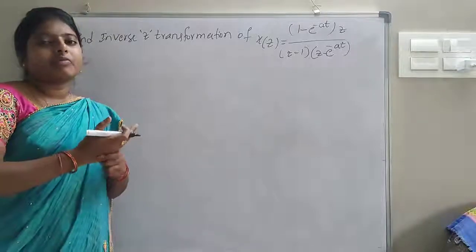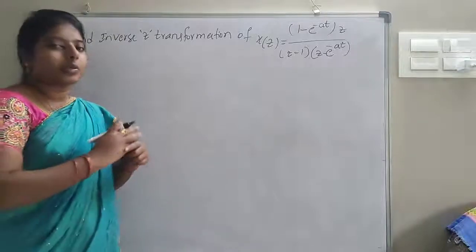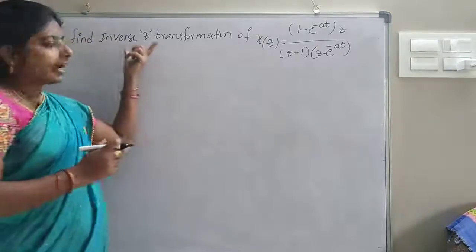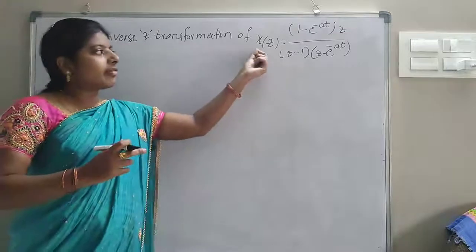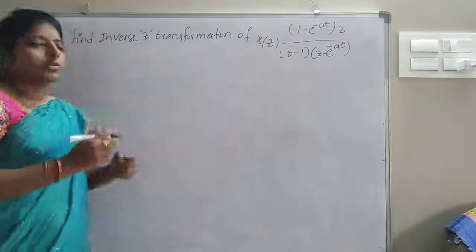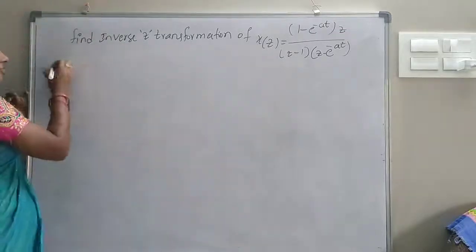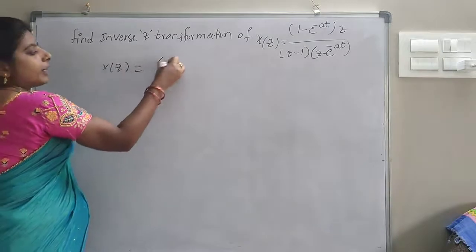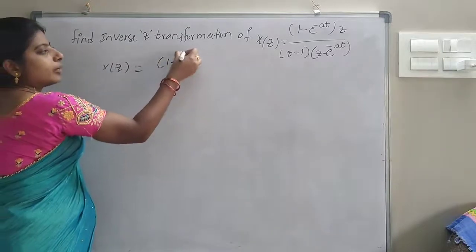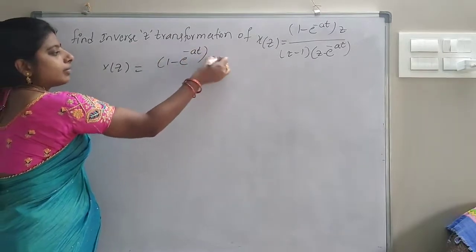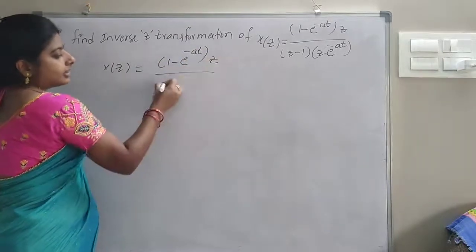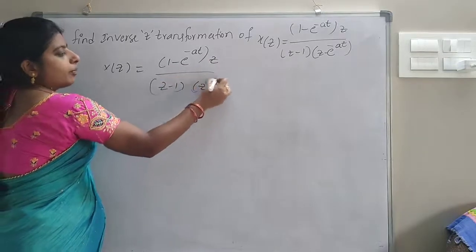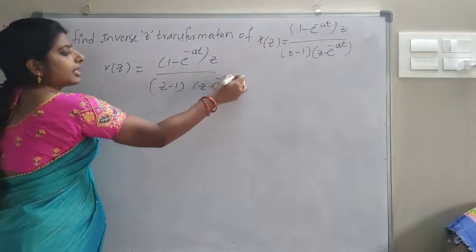Good afternoon all of you. Next problem: find inverse Z transformation of the given function. The given function is S(Z) equal to (1 minus e^(-AT)) times Z, divided by (Z minus 1) into (Z minus e^(-AT)).